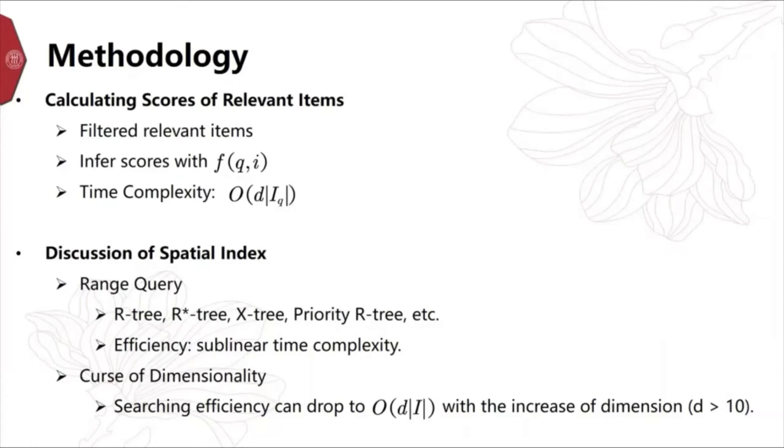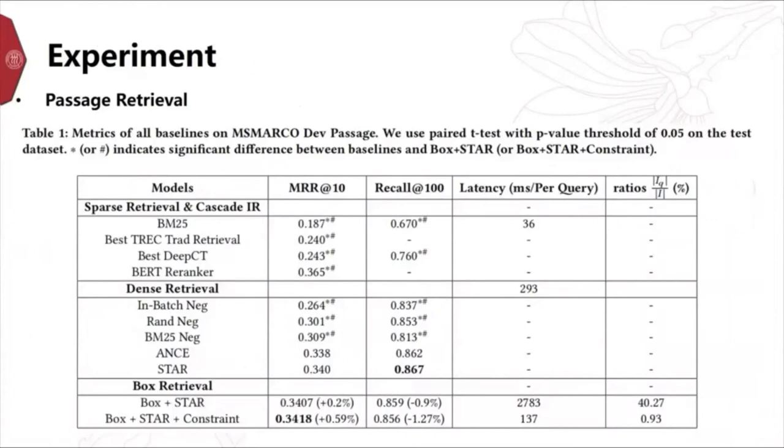We conduct experiments on two tasks of document ranking and recommendation to demonstrate the improvements in both effectiveness and efficiency. For passage retrieval, we use the corpus of MS MARCO passage. The experimental results are given in Table 1. For effectiveness, our box embedding-based model achieved better ranking performance than all vector embedding-based models. We observed a little drop in recall. This is because our box embedding model may filter some false negative documents in searching stage.